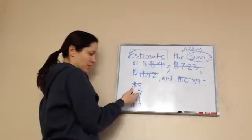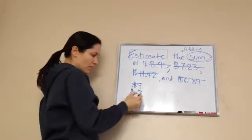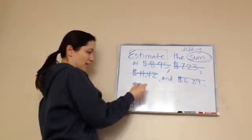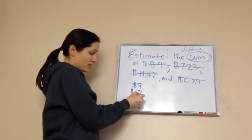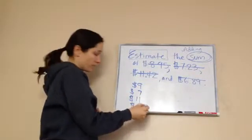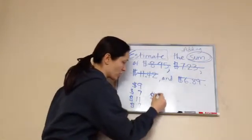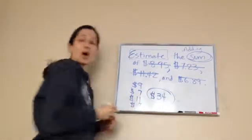So, 11 plus 9 plus 7 plus 7. What does that equal? Well, I'm going to take 11 and 9, and that equals 20. Okay. 27. 34. So, the answer would be $34.00.